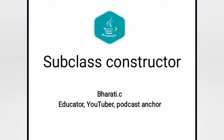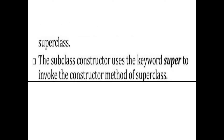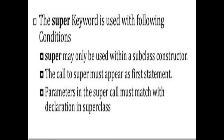In this video we are going to discuss subclass constructors. A subclass constructor is used to construct the instance variables of both the subclass and the superclass. The subclass constructor uses the keyword super to invoke the constructor method of the superclass. The super keyword is used with the following conditions: first, super may only be used within a subclass constructor; second, the call to super must appear as the first statement; and third, parameters in the super call must match with the declaration in the superclass.